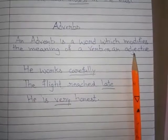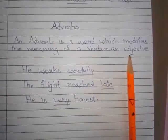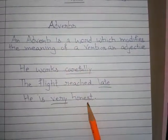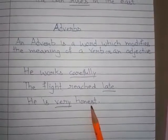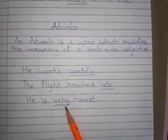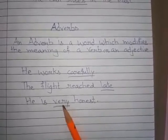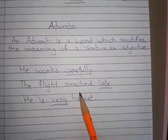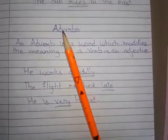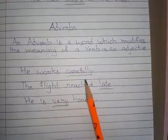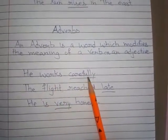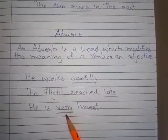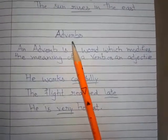Definition में यही पढ़ा था कि जो शब्द verb और adjective की विशेषता दर्शाता है, उसे adverb कहते हैं। इस last sentence में जो honest word है, यह adjective है, और जो underlined word है — very — यह adverb है। So, इन तीनों sentences में जो underlined words हैं — carefully, late, और very — यह सारे adverbs हैं।